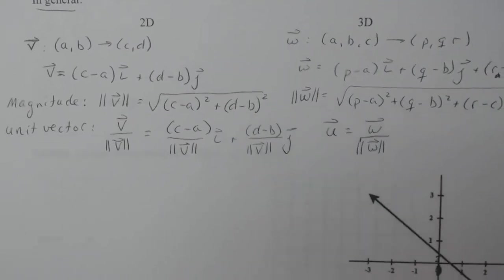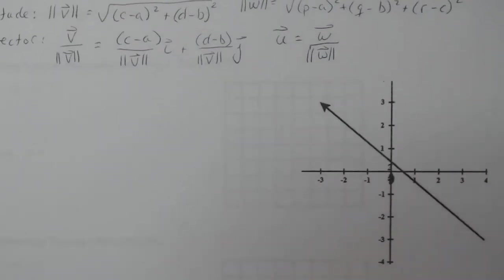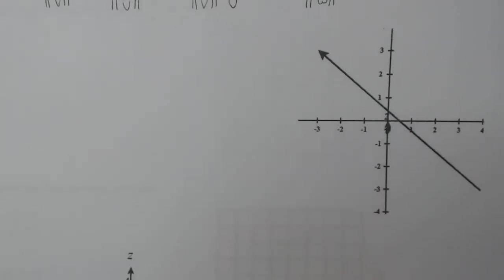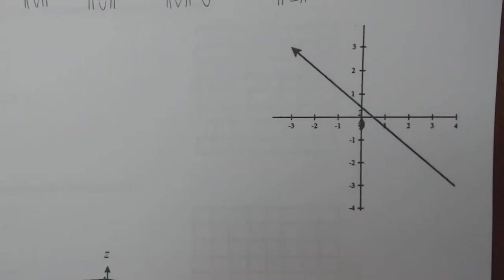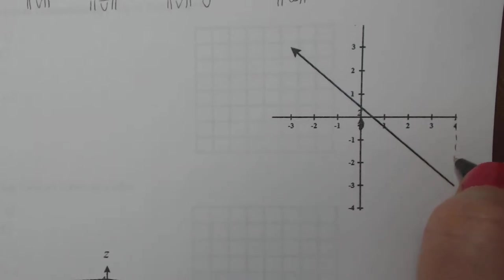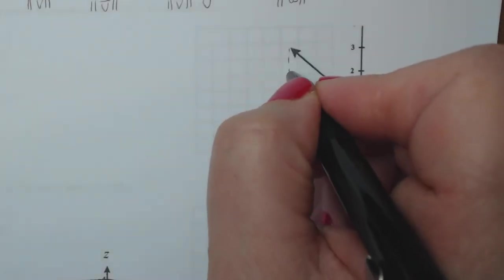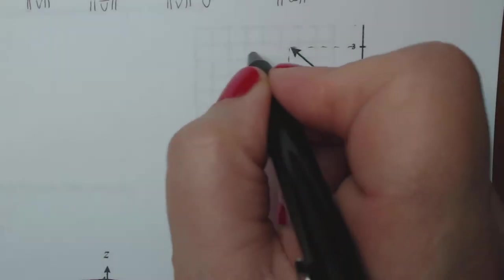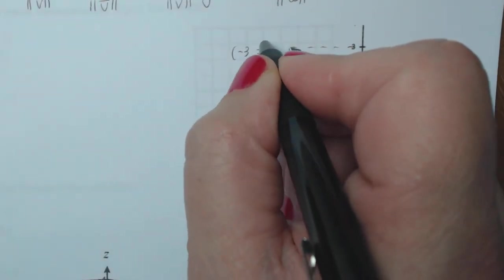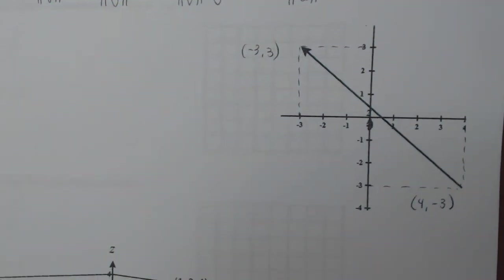So we're going to utilize these formulas down here to resolve a vector in two space and a vector in three space into components. So the first thing you want to do when you do this is write down the from point and the to point. So here, if I draw these little dashes to kind of show you where it is, I'm going to start from (4, -3) and I'm going to go to looks like (-3, 3).